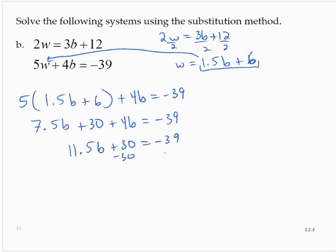Subtracting 30 from both sides of the equation, 11.5b equals negative 69.